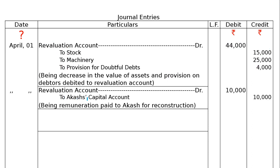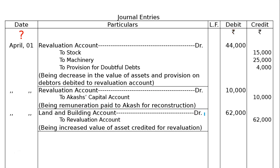Second journal entry: Akash carried out the revaluation and reconstruction, so the expenditure is charged — Revaluation account debited to Akash's capital account 10,000. Narration: being remuneration due to Akash for reconstruction — write 'due' rather than 'paid' since cash was not given; his capital account was credited. Third journal entry: Land and Building account debited to Revaluation account 62,000. Narration: being increased value of land and building credited to Revaluation account.